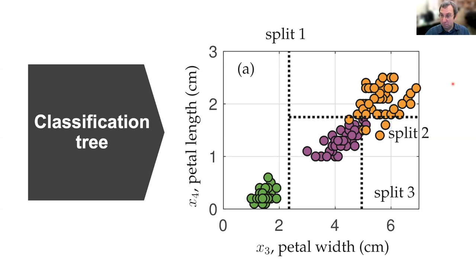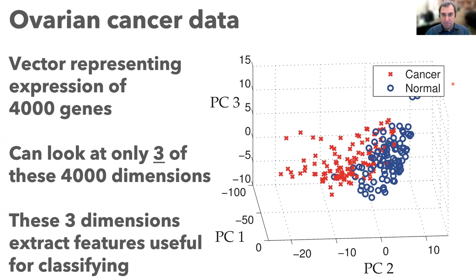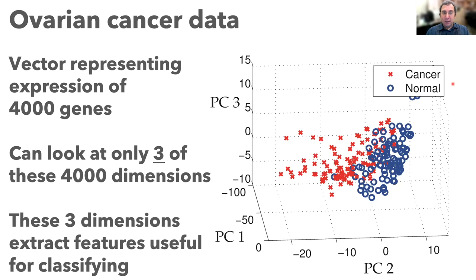In other cases it's not obvious what the features would be. Here's an example using a built-in MATLAB dataset of ovarian cancer data — about 120 patients with cancer and 150 normal. For each person, the data provides a vector of 4,000 numbers, each representing the expression of a gene. If we look at only three of these 4,000 dimensions — if we pick the right three — we can separate the cancer cases from the normal ones.